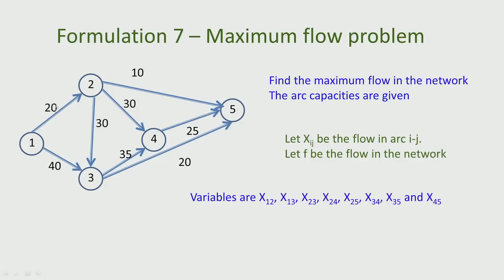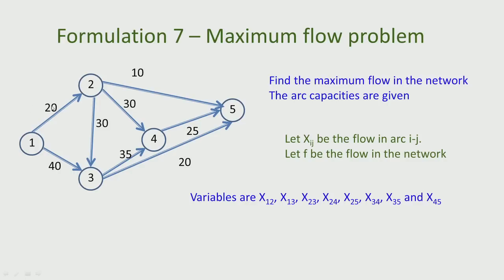These arcs have capacities. We want to find out the maximum flow that can be sent through this network, which means we will assume that points 1 and 5 will act as some kind of a source and destination. Node 1 is called the source and node 5 is called the destination — sometimes also called the sink. Some commodity or fluid is flowing from 1 to 5 along these arcs which act like pipes. The arc capacity is the equivalent of what can flow in this arc.